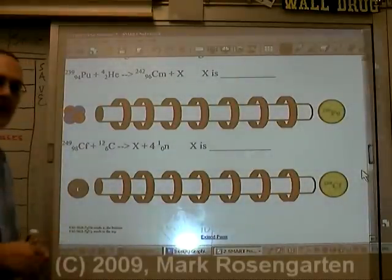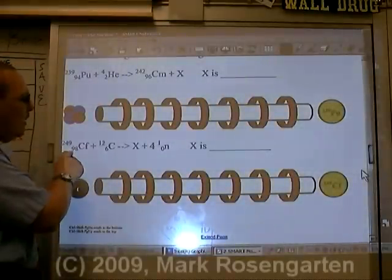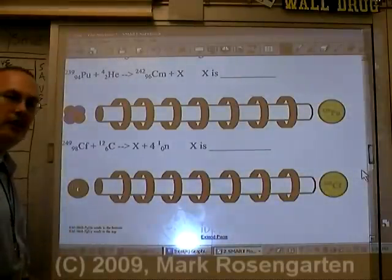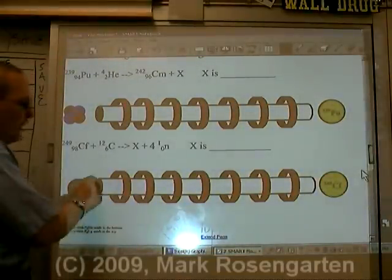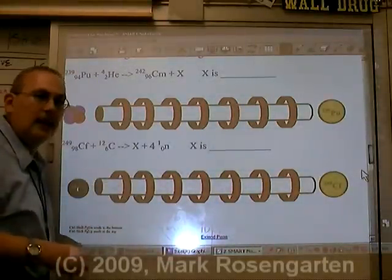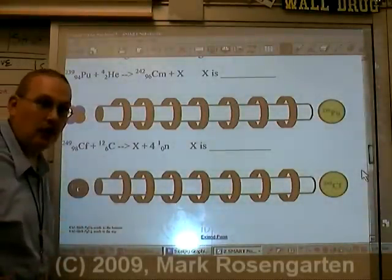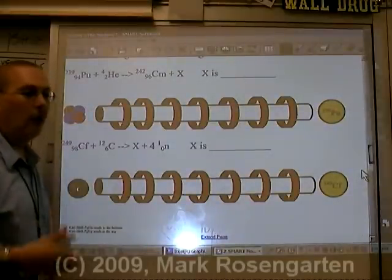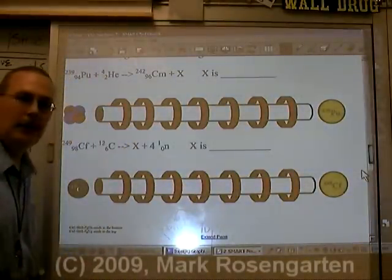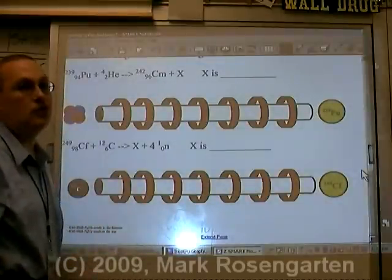The next artificial transmutation is basically the same thing. We've got californium-249 being hit by a large nucleus of carbon after passing through a particle accelerator. Now particle accelerators use charge to accelerate, so anything that doesn't have a charge like a neutron or a gamma ray cannot be accelerated through a particle accelerator.